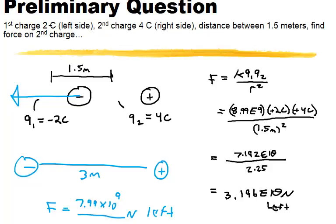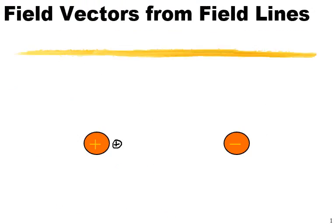Let's draw the electric fields between two spheres. The sphere on the left is positively charged, and the sphere on the right is negatively charged. We want to draw the field lines. Go ahead and pause the clip. Remember how we draw these — we use a positive test charge. Place some positive test charges around the sphere on the left and see where they go. When you're ready to check, hit play.